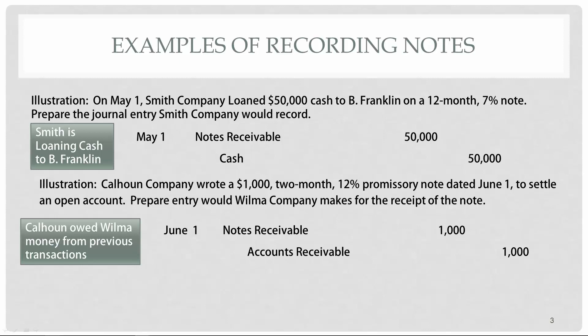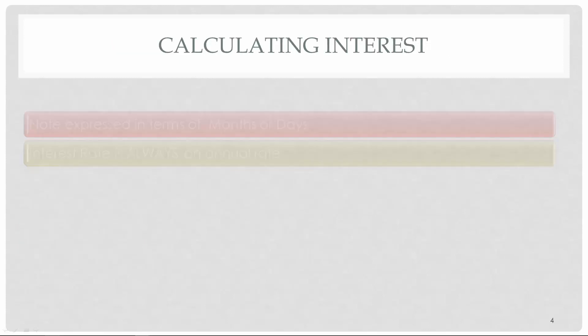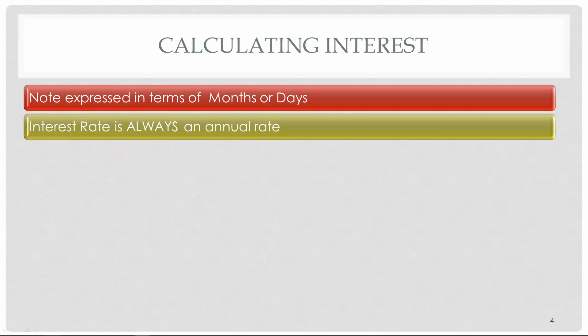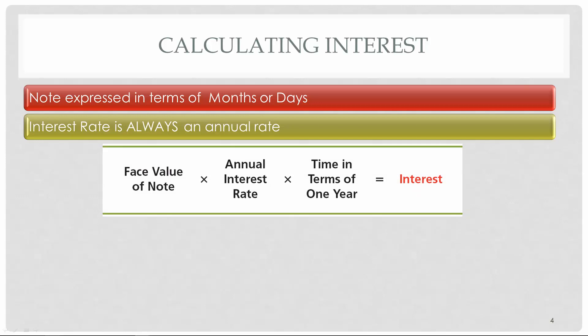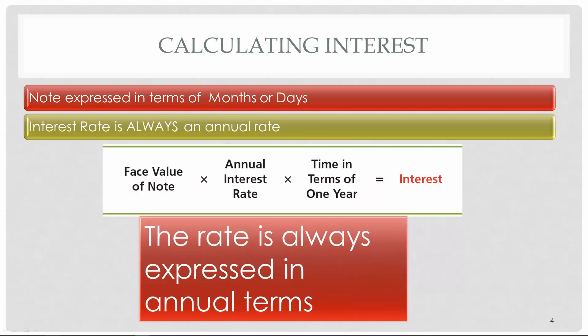Let's look at the calculations for interest on notes. Notes are always given to us in terms of months or days — it could be a two-month note, a 12-month note, or a 10-day note, whatever the two parties decide. The interest rates are always presented at an annual rate, so when calculating interest we take the face value times the annual interest rate times the amount of time that has passed.